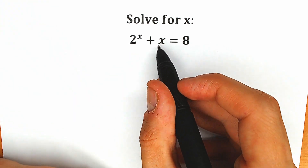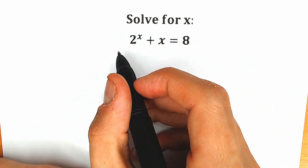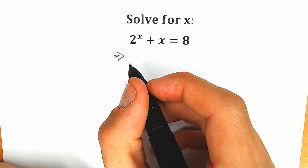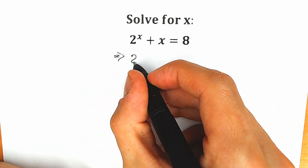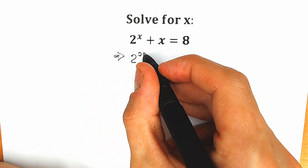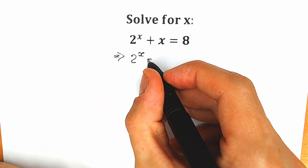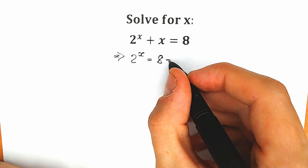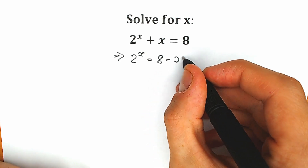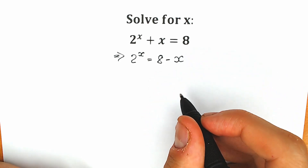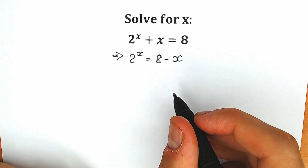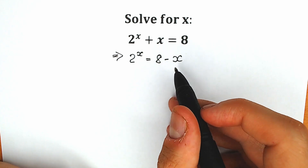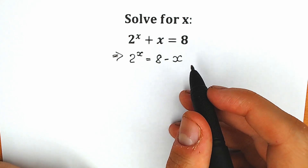First of all, I'm going to subtract x from both sides. As a result, we have 2 to the power x on the left side. And on the right side we can write 8 minus x. So this is our first step — we just move x to the right side.